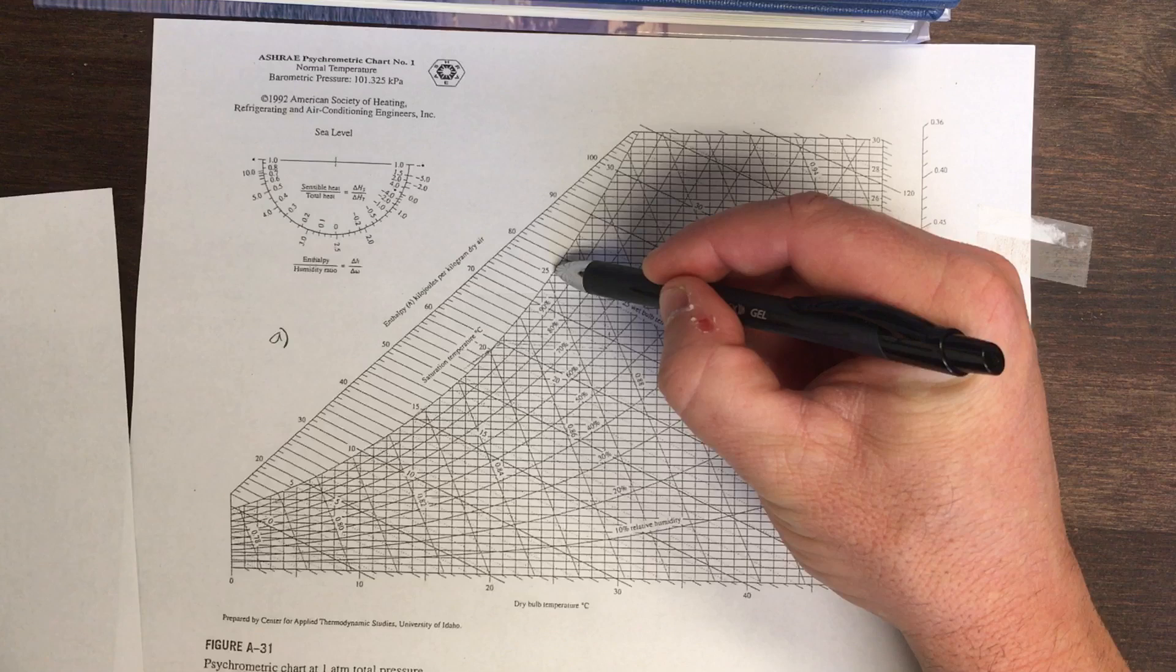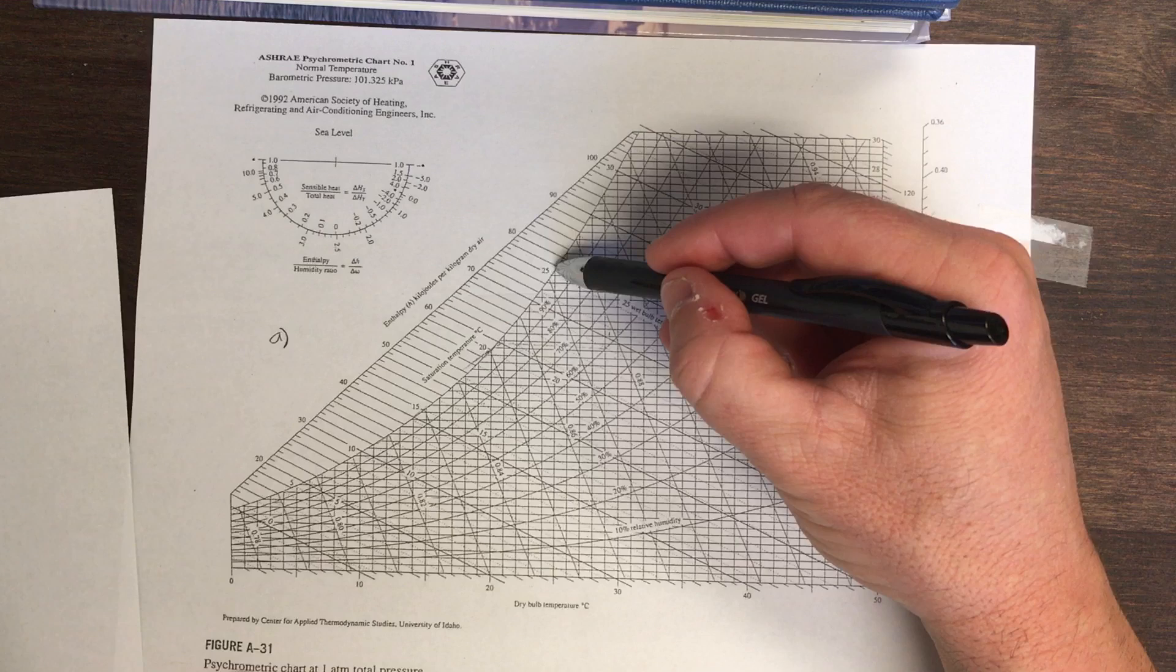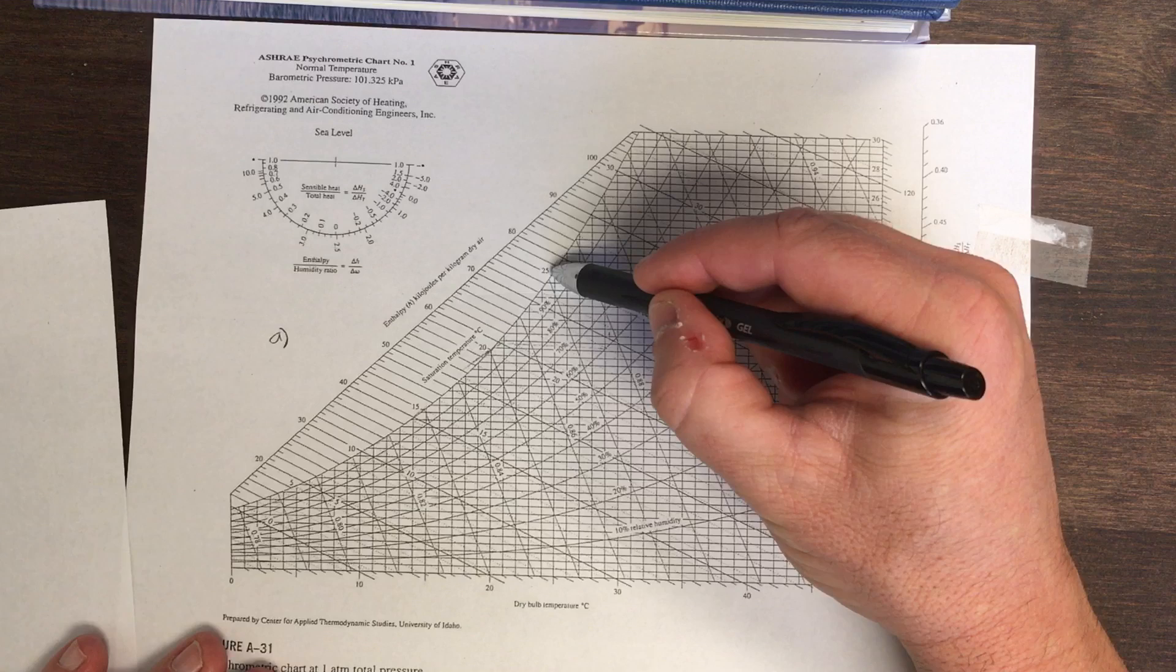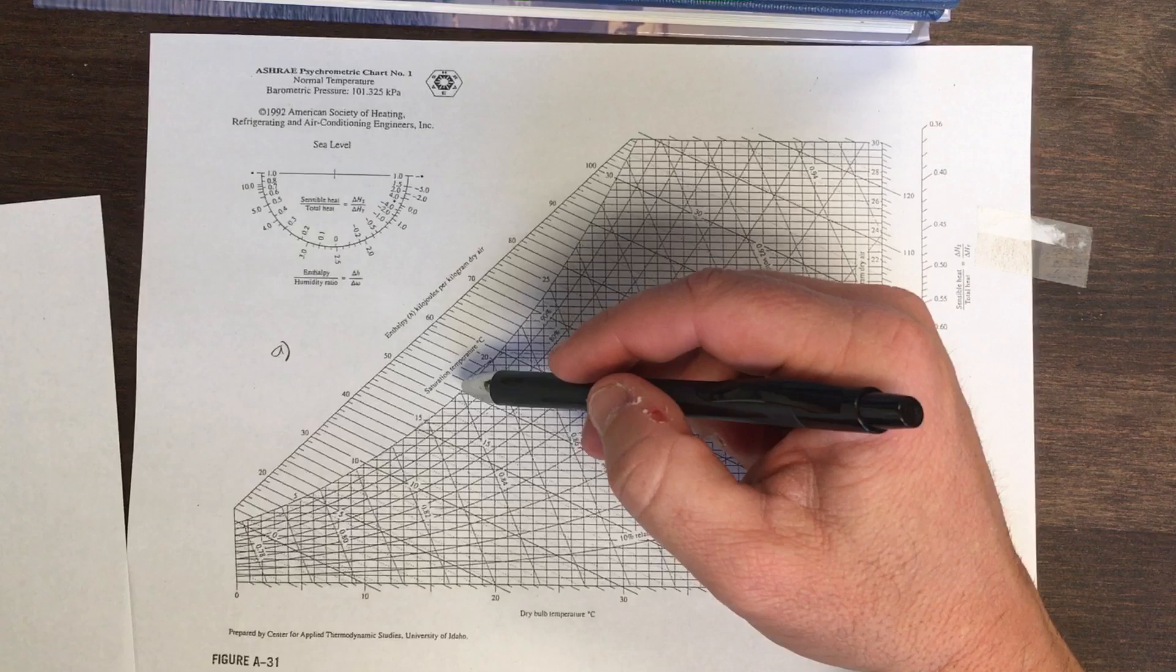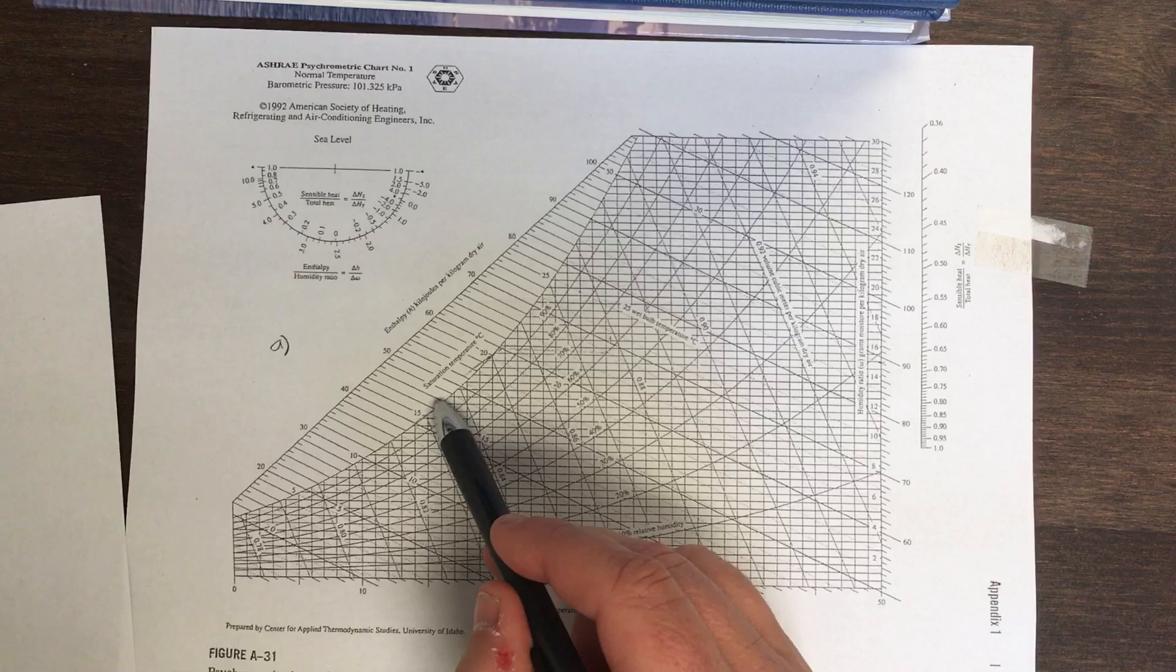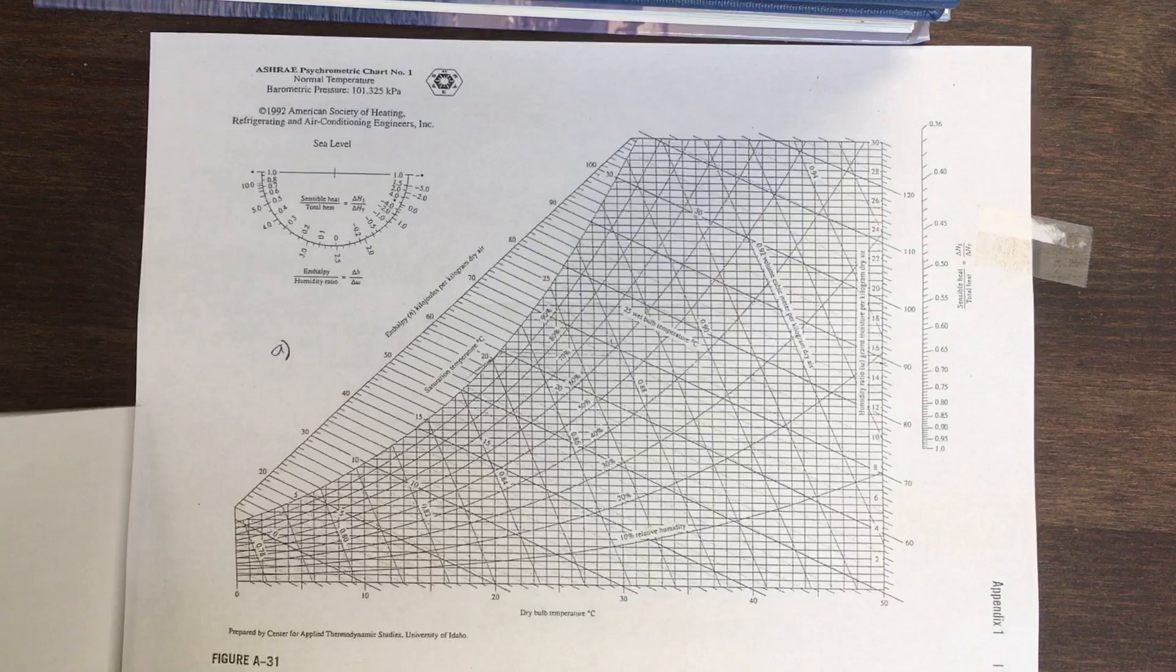So if I cool and then I get to this point, now this air won't support that much moisture if I continue to lower the temperature. I can't go this way. So instead, what's going to happen is some of the moisture in that air is going to condense, turn into liquid, and be removed from the system. So my humidity ratio is going to decrease, and I'm going to go along the line of constant 100% relative humidity, down until I reach the temperature that I cooled at.